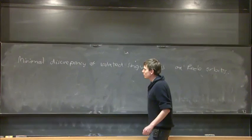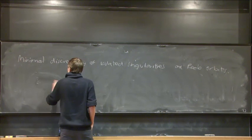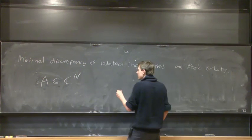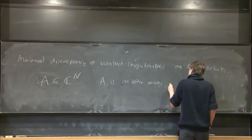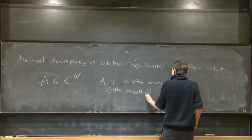So, what's an isolated singularity? I have some affine variety in Cⁿ, so it's cut out by some polynomials. I'm going to assume it's an affine variety, and it's either smooth at zero or has an isolated singularity.